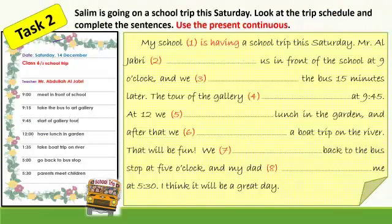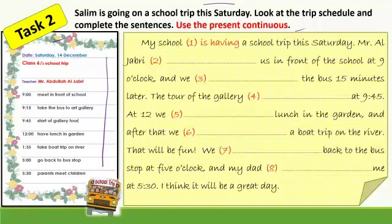Second task: Salem is going on a school trip this Saturday. Look at the trip schedule and complete the sentences using the present continuous for the future. The schedule shows: date — Saturday 14 December, class 6/2, school trip. Pause the video and complete the sentences. Okay, let's check our answers now.